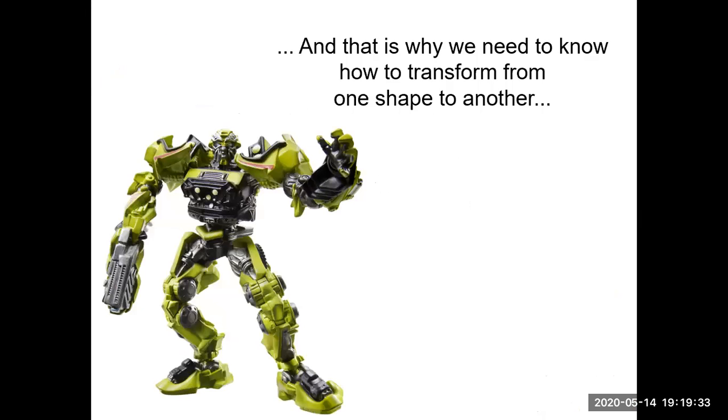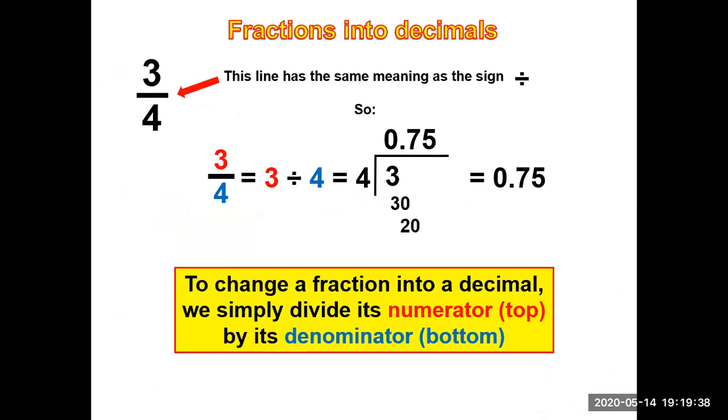And that is why we need to know how to transform from one shape to another. Fractions into decimals: the line has the same meaning as a division sign. Of course you know that already. So three quarters equals three divided by four.